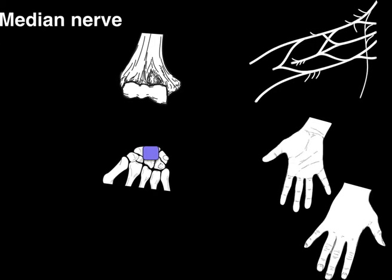Let's start with the median nerve. The primary levels of contribution to the median nerve are C6 to T1, and sometimes there's a contribution from C5. On the brachial plexus, the median nerve sends a branch all the way down the axilla and arm where it does not give off any branches, and then it crosses right in front of the medial supracondylar ridge of the humerus.